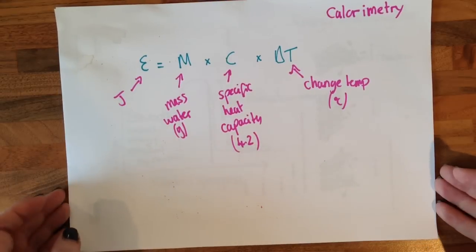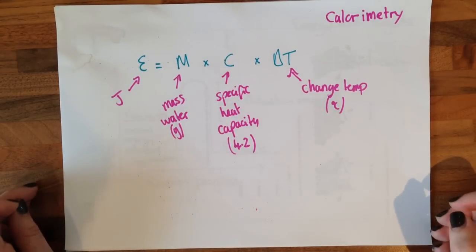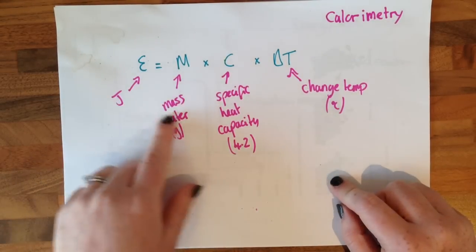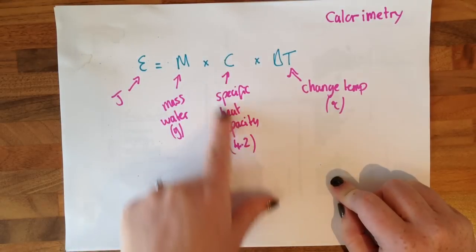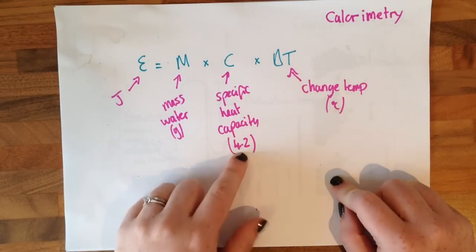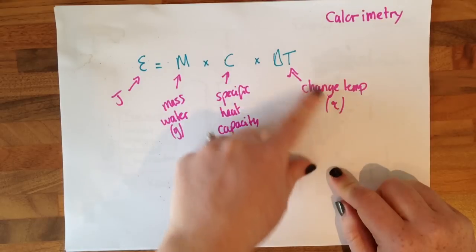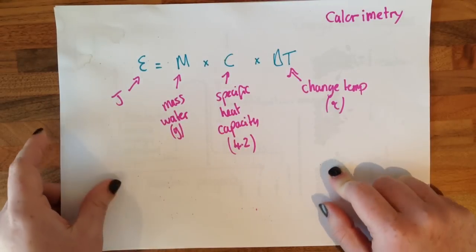This is the equation you're going to use to work out any energy released. We have energy here in joules, mass of water in grams, specific heat capacity which is 4.2, and temperature change.